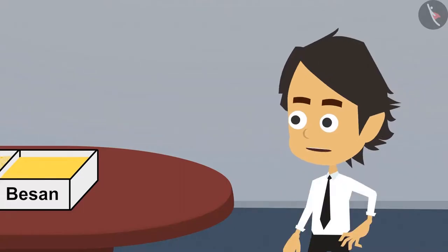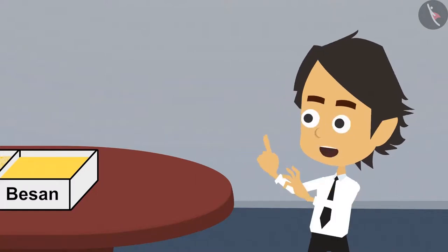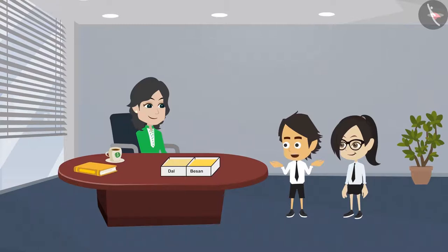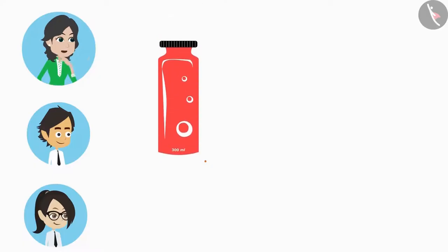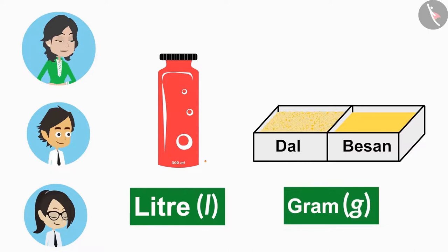We can neither cut nor count it, and unlike the liquid, we cannot measure besan. So how do we divide besan? Just like we use liter to measure liquid, we use gram to measure solid objects.